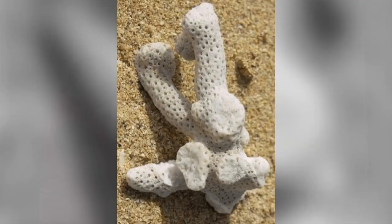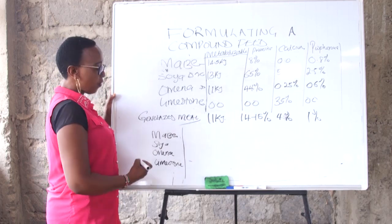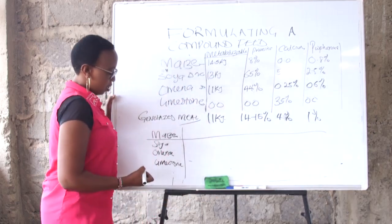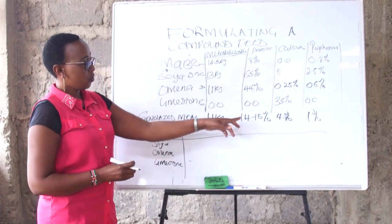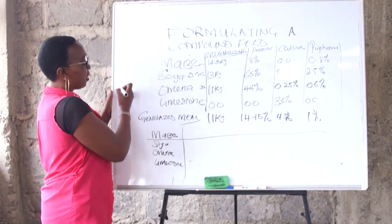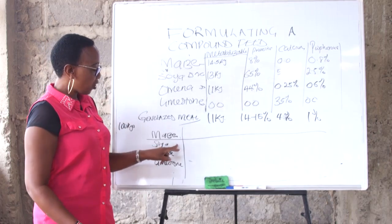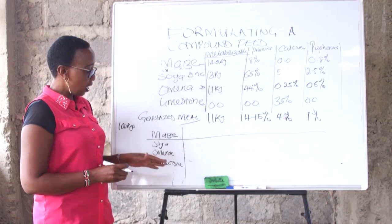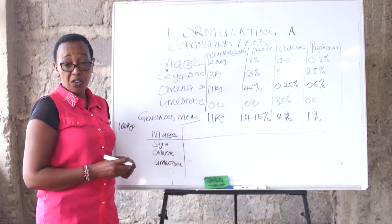We want to formulate a generalized meal of 11 kilojoules of energy, and we need 14 percent protein. We are just making 100 kilograms of feed. Soya is giving us 15 percent, maize is giving us 14.5 percent, so that means you don't use a lot of maize.